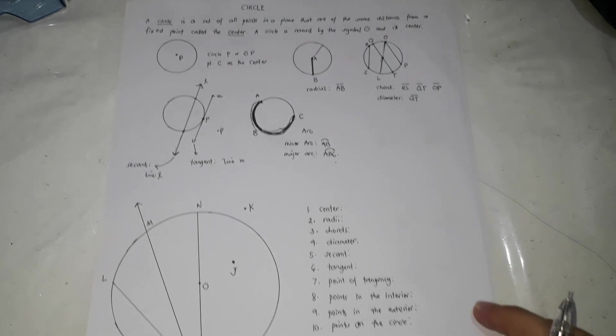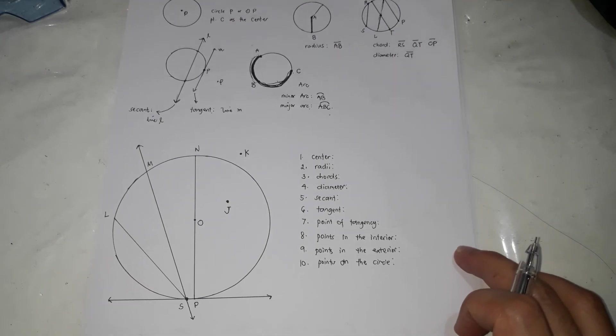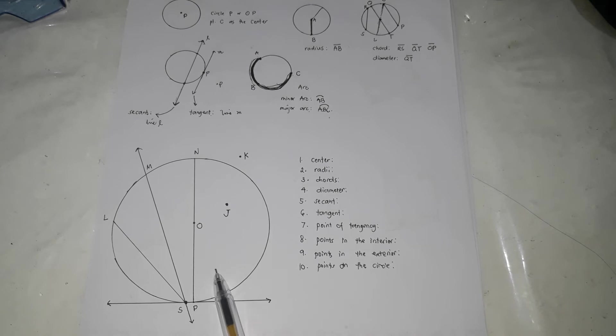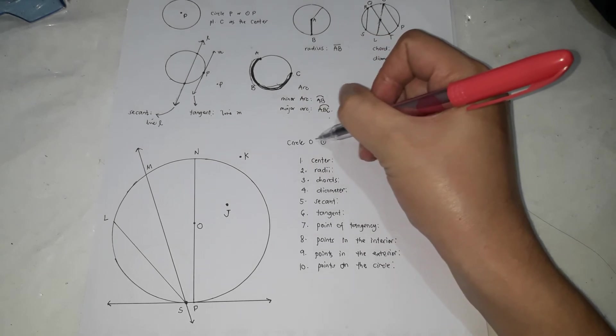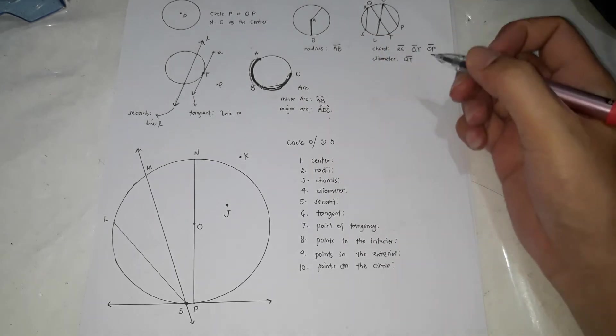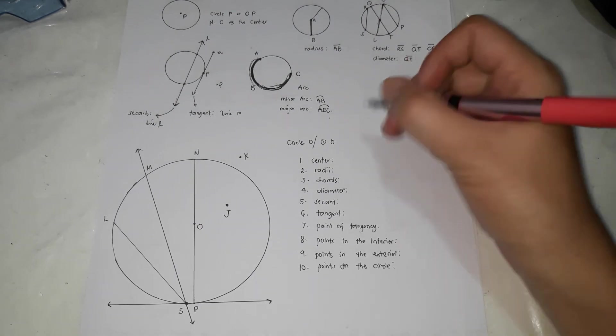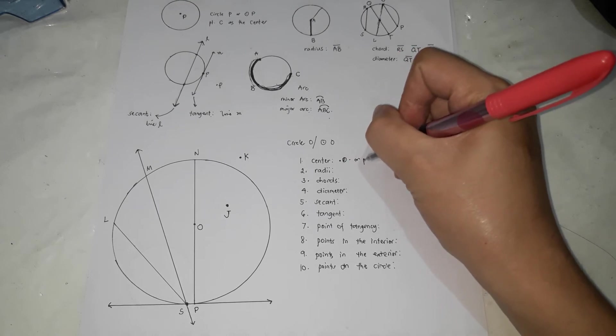So we'll proceed with an activity. So first one, we're going to identify the center, the radii, the diameters, and so forth. So this is a circle and its name is circle O. Number one, identify the center. The center is point O.